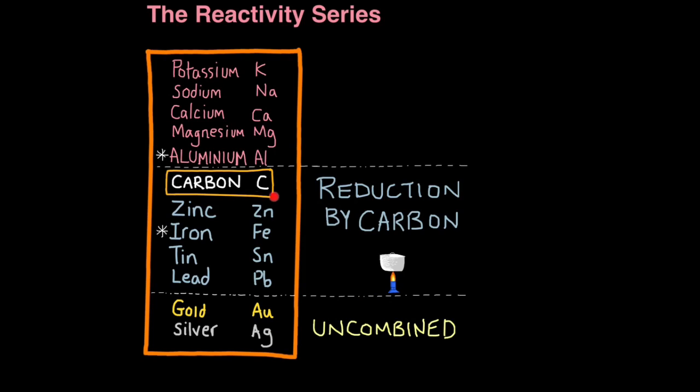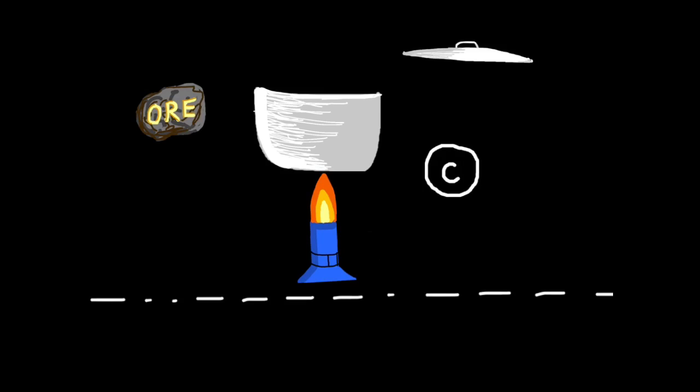Anything which is lower in reactivity than carbon can be reduced by carbon. So just like in the reduction and oxidation reactions I just showed you, you'd employ exactly the same idea to separate these metals from their ores, or oxygen. So carbon will steal the oxygen away from these metal oxides. It will steal oxygen from zinc oxide. It will steal oxygen from iron oxide.